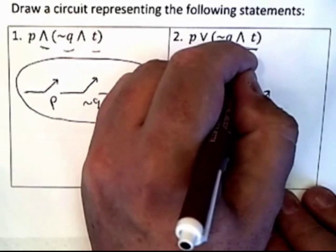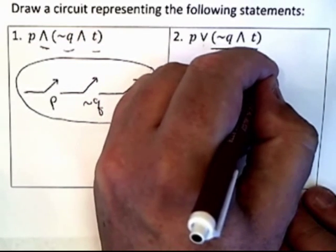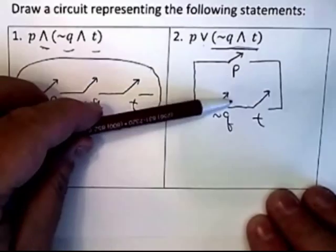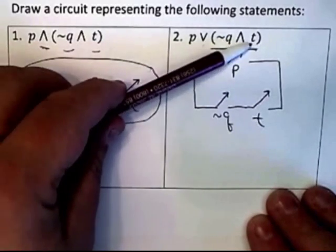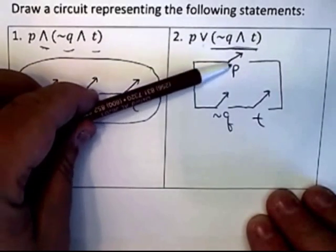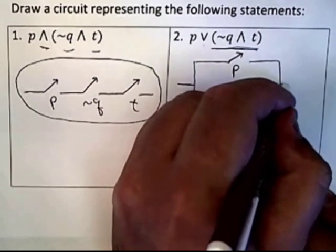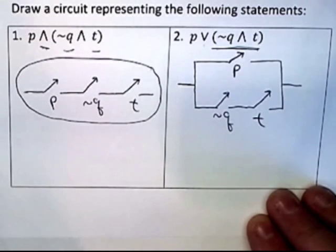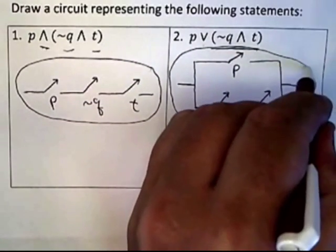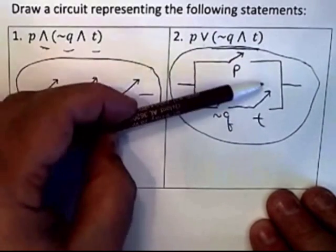Now the part I've drawn here represents the parenthetical part, and it is OR'd with P. OR is parallel, so that has to be made in parallel with P. It doesn't really matter if P goes on top or bottom. The point is I have a parallel circuit labeled P that's parallel to this compound statement. So the parenthetical part is in series — that's the AND — and P is OR'd with it. Completing your circuit, you've got your power source on one side and your light bulb on the other. An AND is going to be series and an OR is going to be parallel.